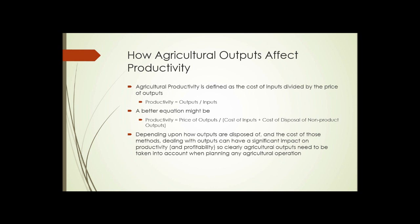First, we're going to take a quick look at how agricultural outputs affect productivity. Agricultural productivity is defined as the cost of inputs divided by the price that you get for your outputs — you can see the formula on the screen. Productivity is the price you get for your outputs divided by the cost of your inputs.